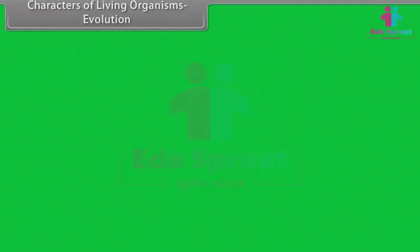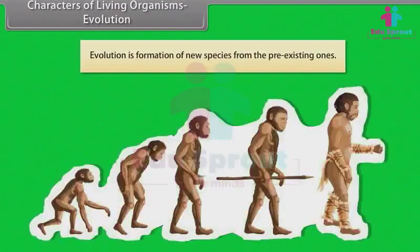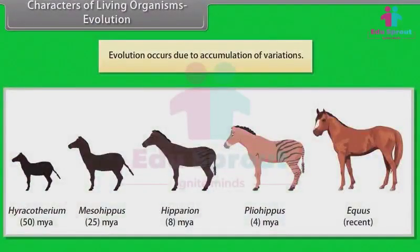Evolution is formation of new species from the pre-existing ones. Evolution occurs due to accumulation of variations.